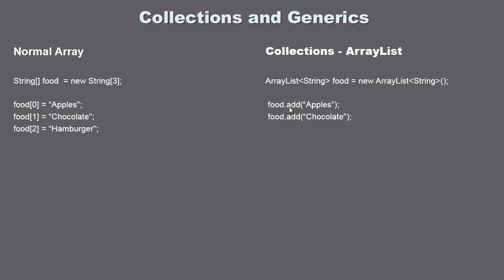Now let's talk about generics. Generics are actually pretty simple — you'll see these angle brackets, and inside them we specify the data type. I specified String, which means down here I can only use strings; I can't use an int, double, or character. You must use the data type you specify up here. You can specify int, double, or any type you want between these angle brackets.